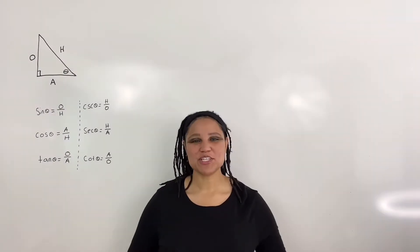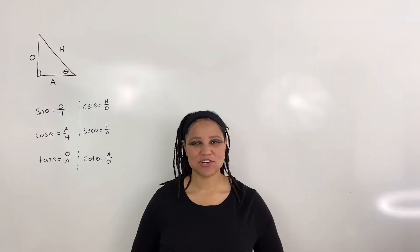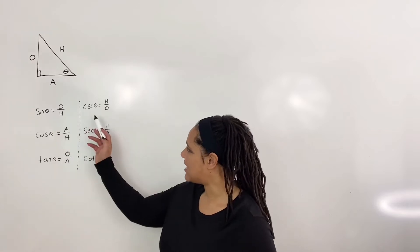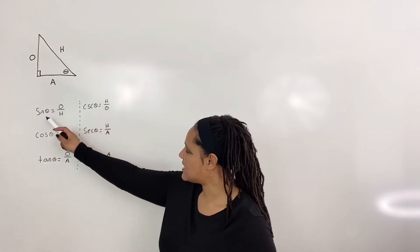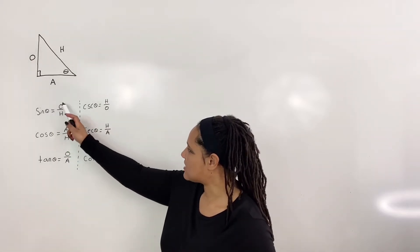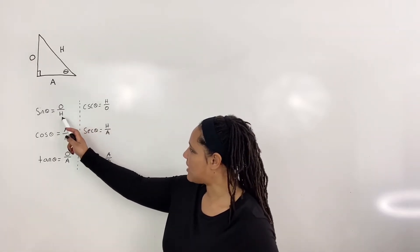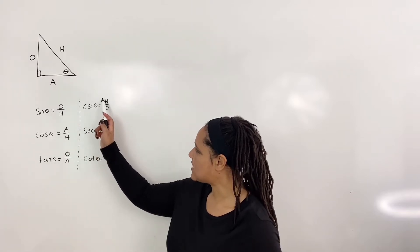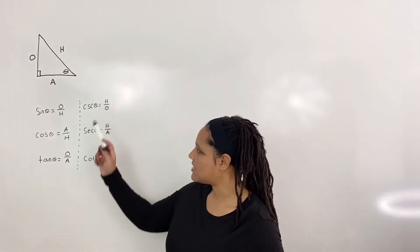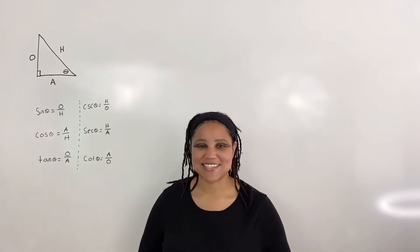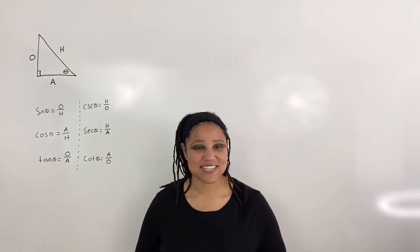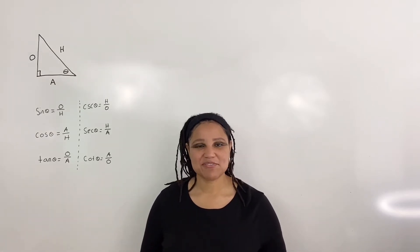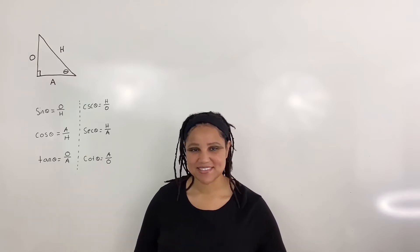We will first prove the reciprocal identities. Let's look at sine and cosecant. Note that sine of theta is opposite over hypotenuse and cosecant of theta is hypotenuse over opposite. Clearly sine and cosecant are reciprocals of each other, but let's verify this step by step.